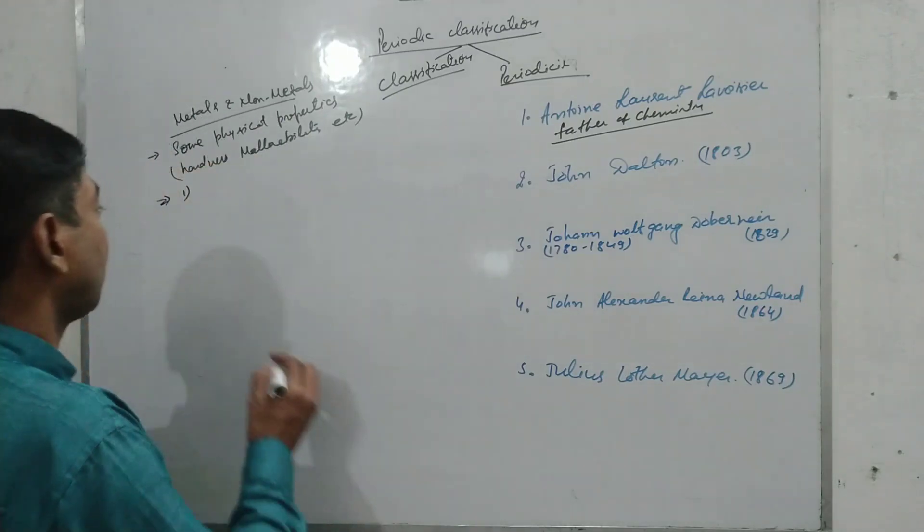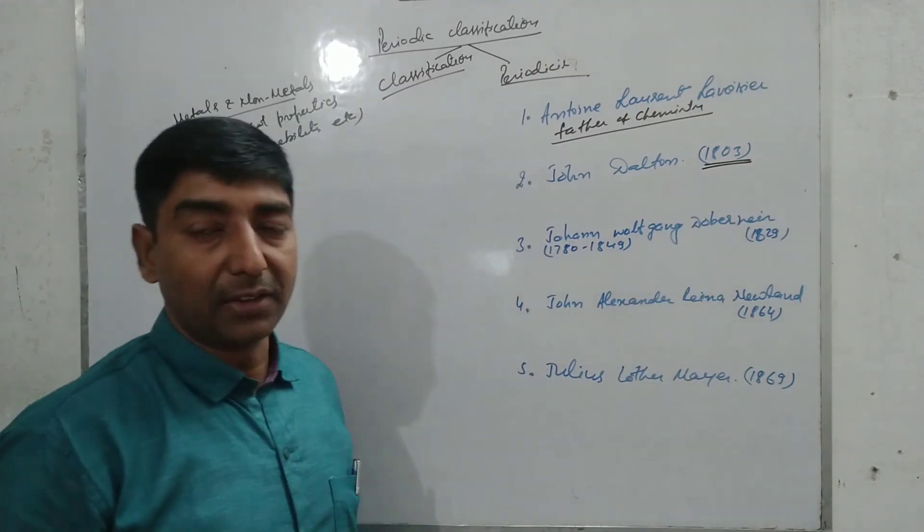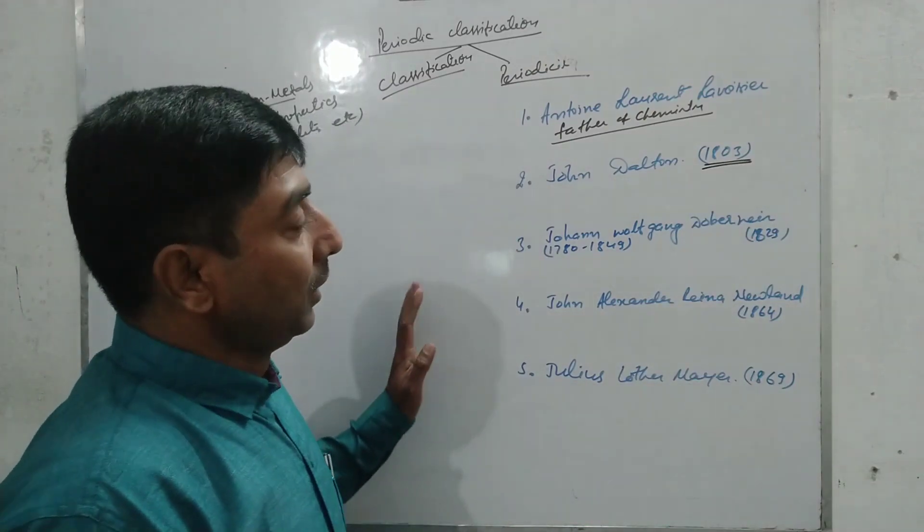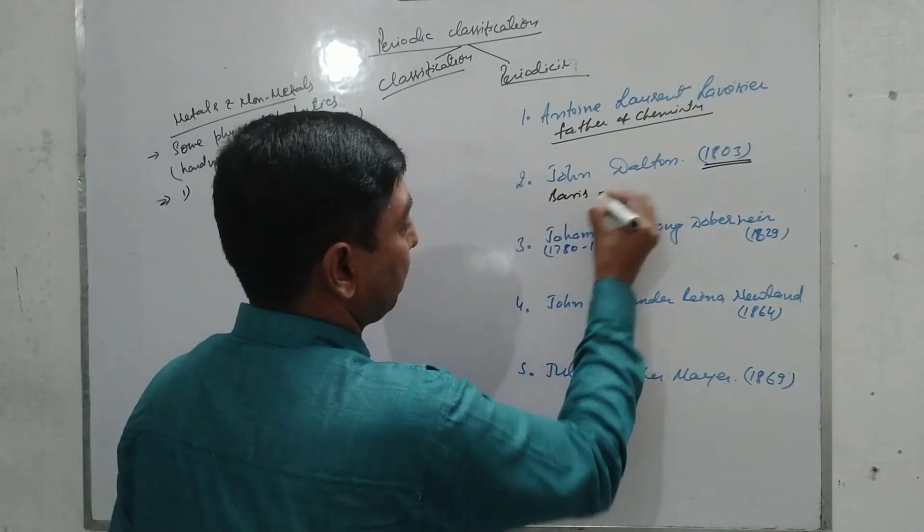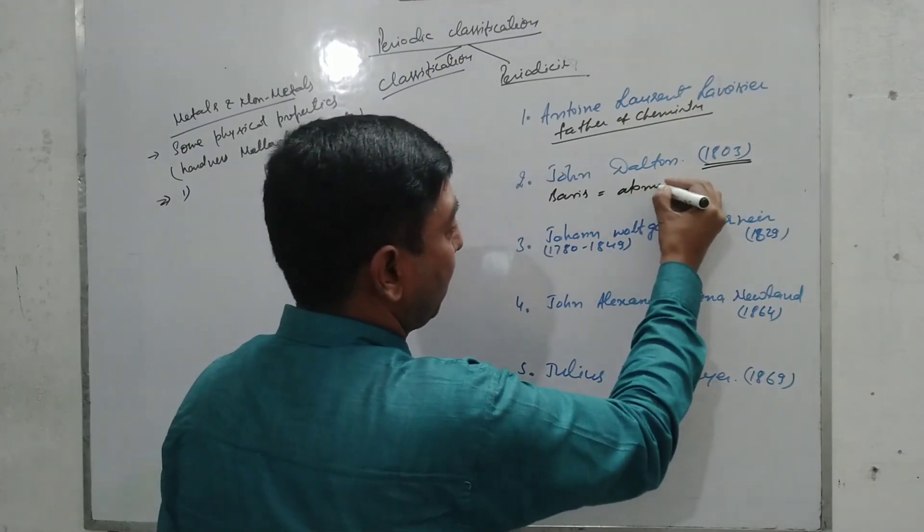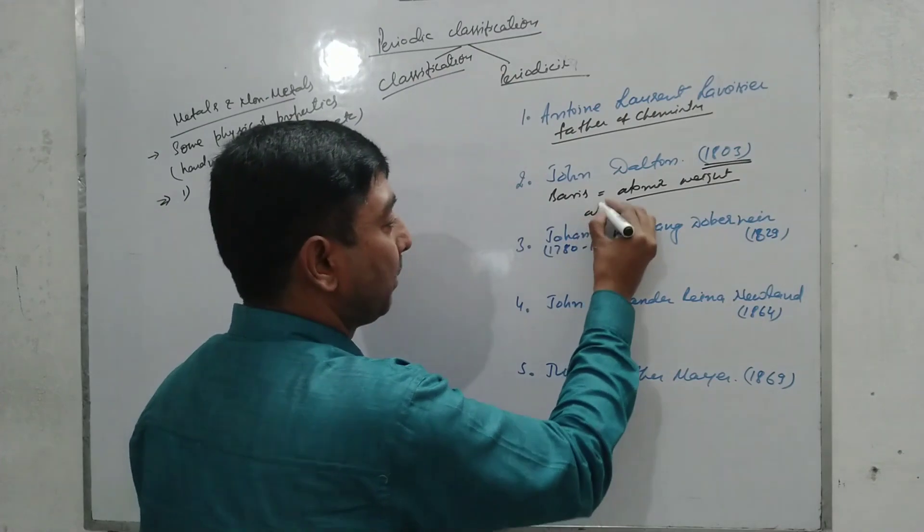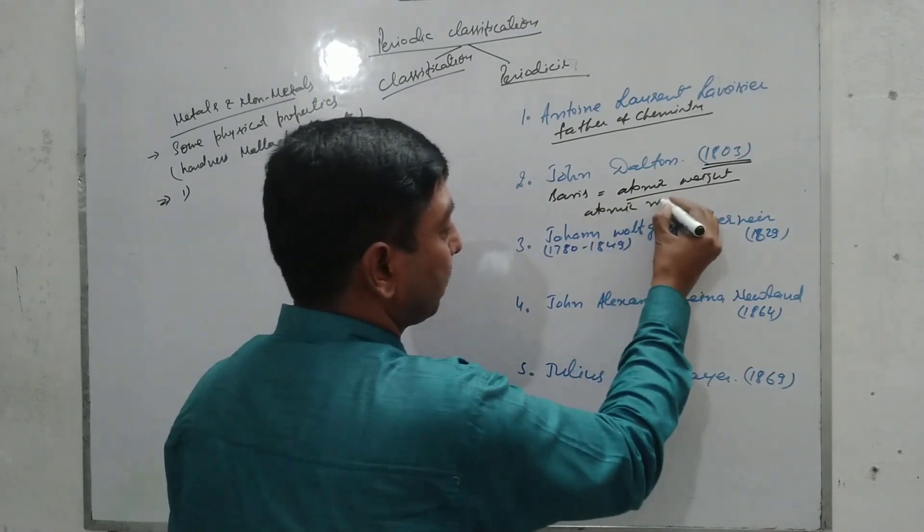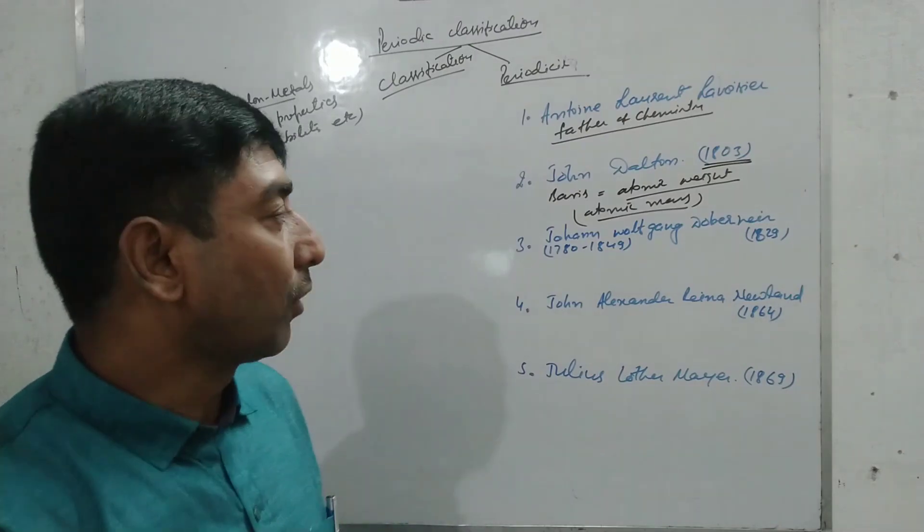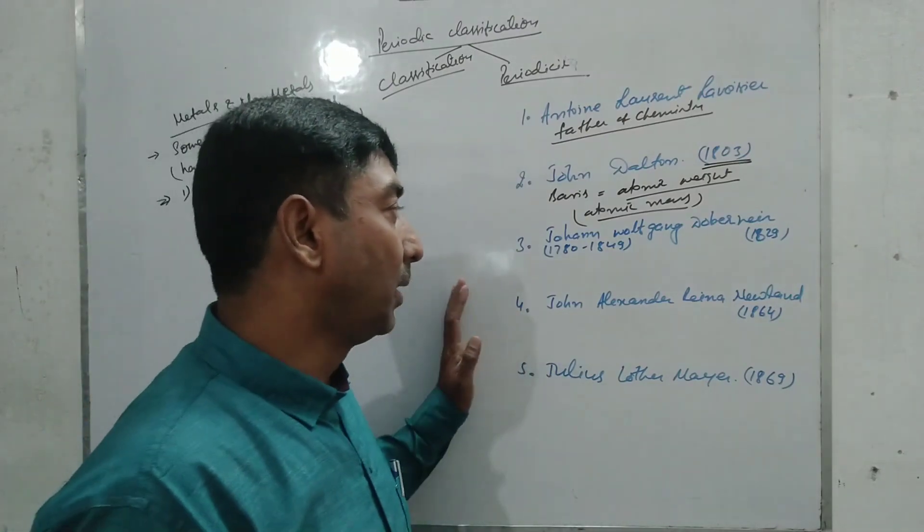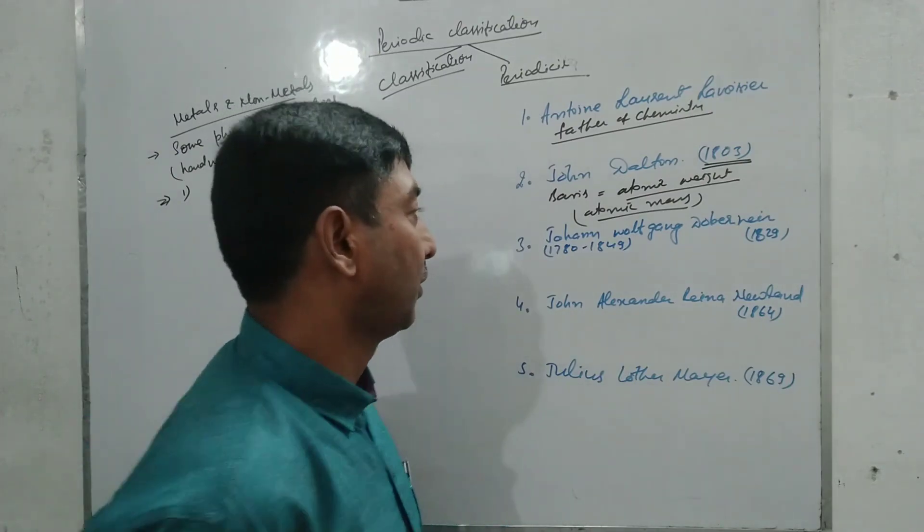Next, John Dalton in 1803 classified the elements. He took the basis of his classification as atomic weight, which is later on called atomic mass. This classification was not sufficient and that is why this classification was rejected.